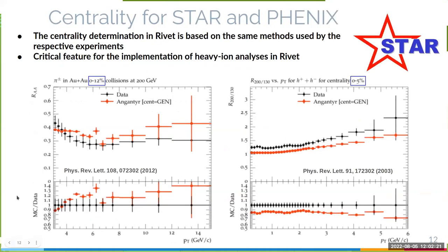It's not only ALICE — it is also possible to determine centrality for STAR and PHENIX experiments. These projections for centrality calibration use analogous methods. Here I show some examples: on the left is the R_AA of charged pions for gold-gold at 200 GeV in the 0–12% centrality class, with black points from HEPData and red points from HIJING run using this code.